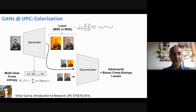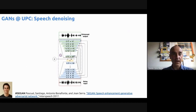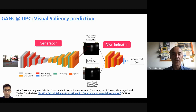Santi Pascual was one of the first authors to apply GANs to speech, with a model called SEGAN that was used for speech denoising — cleaning noise from speech. And Junting used it to improve a model for what's called saliency prediction, meaning given an image, try to predict the fixation points of the human gaze.